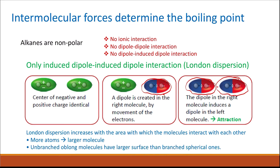However, unbranched alkane molecules have a larger surface area compared to branched ones. Because branched alkanes have a lower surface area, there are fewer London dispersion interactions between their molecules, and so they have lower boiling points.